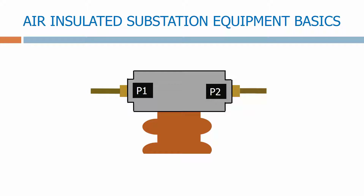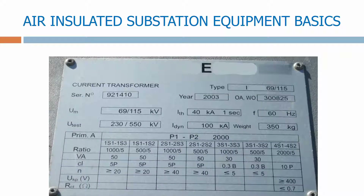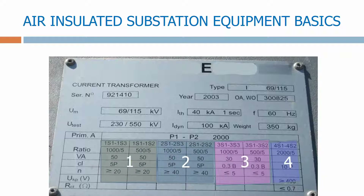The final way we can identify a CT is the CT rating plate. This shows all of the information about the CT and identifies how many current windings we have. For this example we have four separate measurement windings.